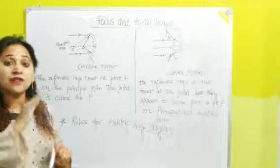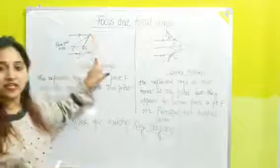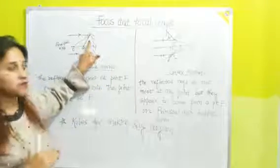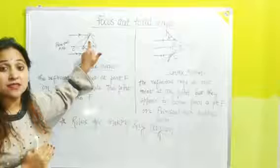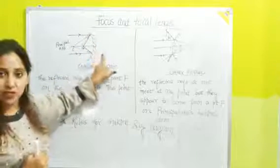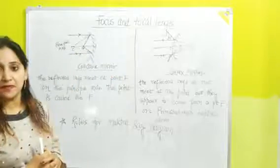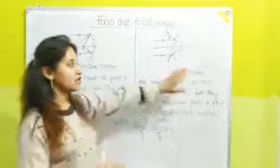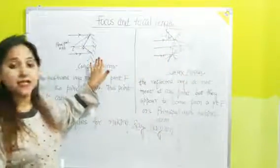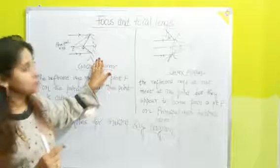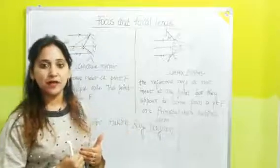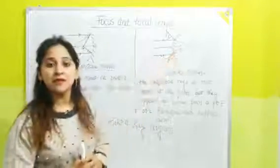In a concave mirror, the outer part is silvered/polished and the inner part is the reflected part. On the other hand, in a convex mirror, the outer part becomes the reflecting part and the inner part is silvered/polished.